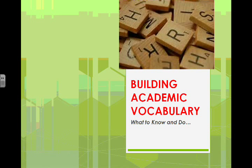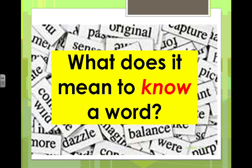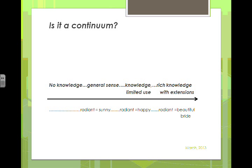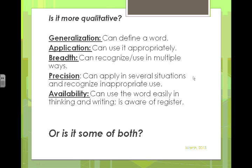We are going to start with an enduring question: what does it really mean to know a word? Is knowing a word a continuum that goes from no knowledge, to some general sense — like knowing that 'radiant' means sunny — to limited use, like knowing radiant can mean happy, to rich knowledge extending into different contexts, like a beautiful bride being radiant? Or is it a qualitative generalization, from being able to define a word all the way to having it instantly available in long-term memory for use in multiple ways?